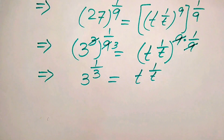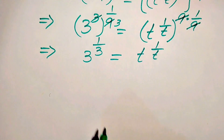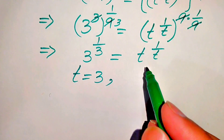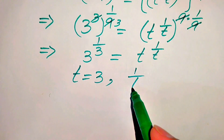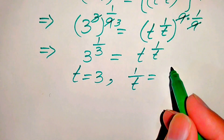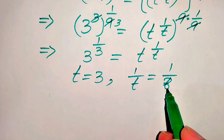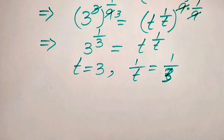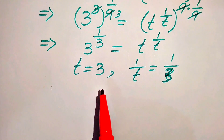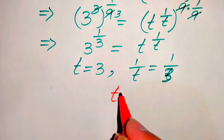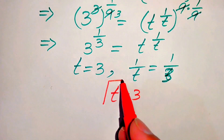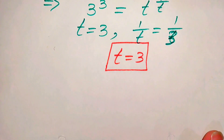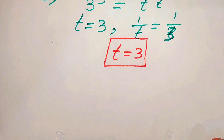Now we compare both sides. When we compare the bases, we get t equals 3. When we compare the exponents, we get 1 over t equals 1 over 3. By comparing both the bases and exponents, we get the same value: t equals 3. So t equals 3 is the only solution of the given equation.